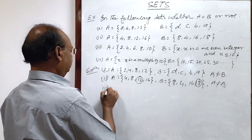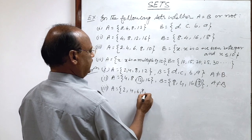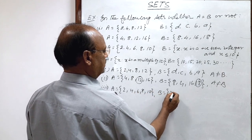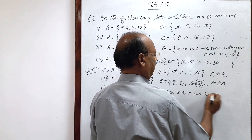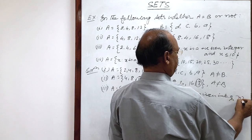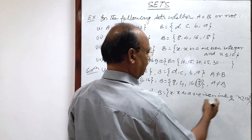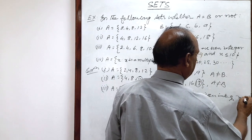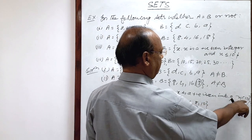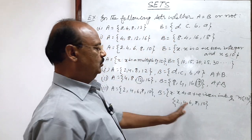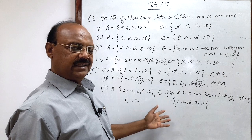Now let us see the third part. Here set A has elements 2, 4, 6, 8 and 10, and set B consists of x such that x is a positive even integer, x less than or equal to 10. Positive even integers less than or equal to 10 are the same elements: 2, 4, 6, 8 and 10. So these two sets are equal — here A is equal to B. Both sets have the same number of elements as well as the same elements.